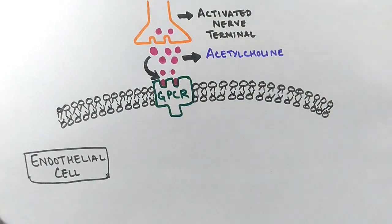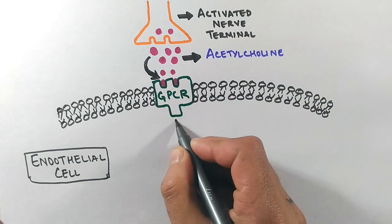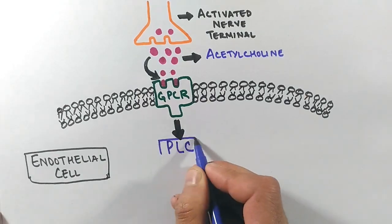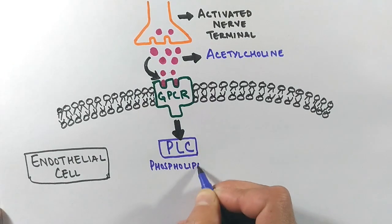This creates a conformational change in the receptor, causing activation of G protein, which ultimately will start a cascade of signals. In the cascade of signals, we see the first component to be activated is PLC, that is phospholipase C.